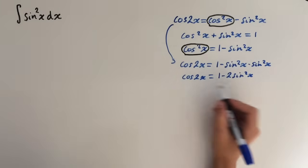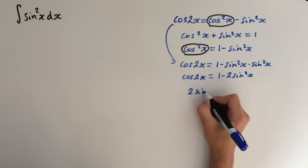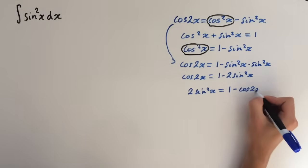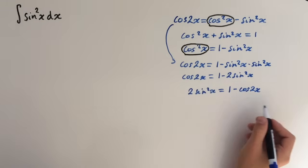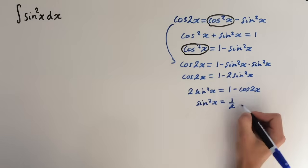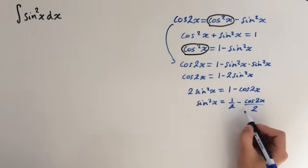Now let's solve for sin squared x. So 2 sin squared x equals 1 minus cos 2x. And if we divide both sides by 2, we get sin squared x equals 1 half minus cos 2x over 2.